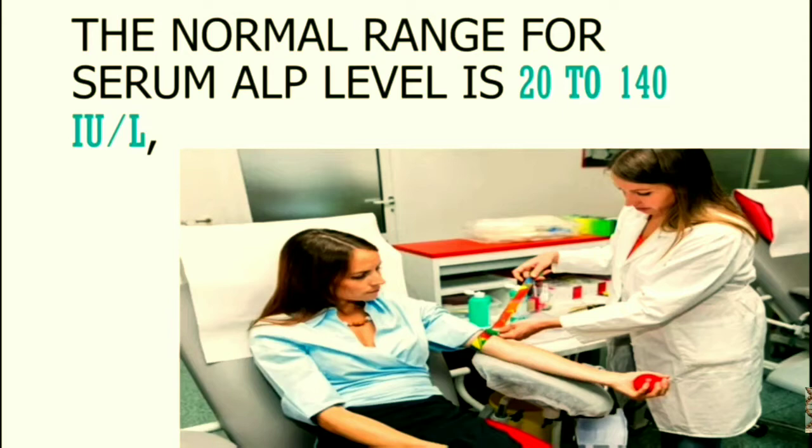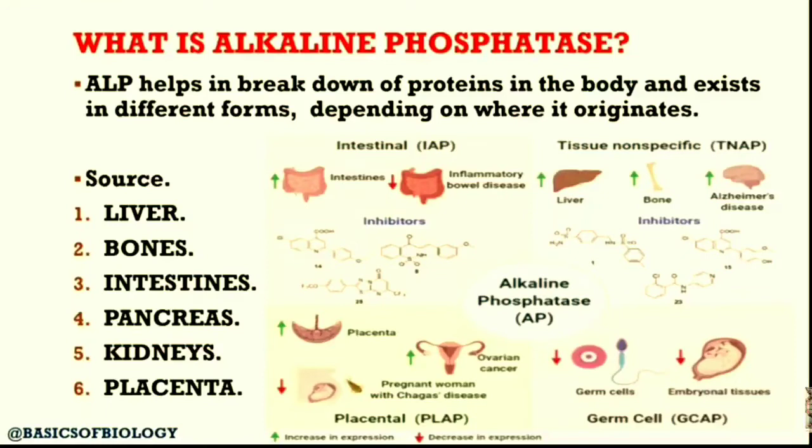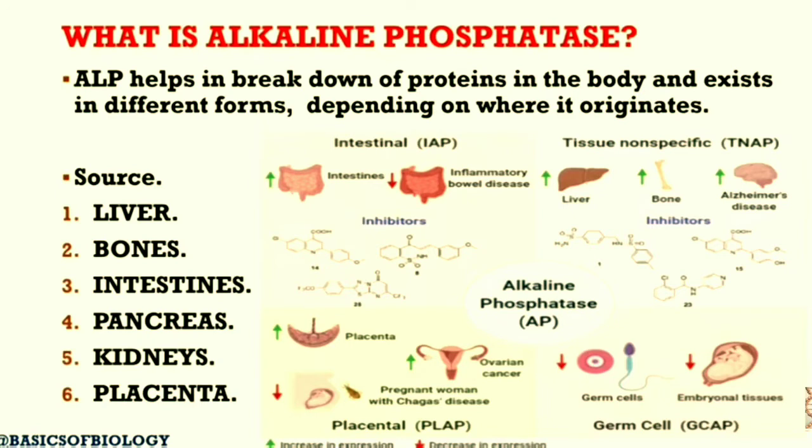Now, what is alkaline phosphatase? An alkaline phosphatase is an enzyme that is found in your bloodstream. It helps with the breakdown of protein in the body and exists in different forms depending on where it originates. Your liver is one of the main sources of alkaline phosphatase, but some is also made in your bone, intestine, pancreas, and kidneys. In pregnant women, alkaline phosphatase is made in the placenta.